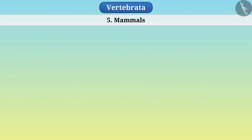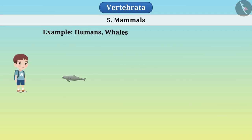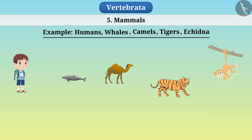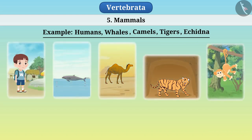Mammals include animals such as humans, whales, camels, tigers, echidna, etc. They are found in all types of environments such as land, water, desert, dark caves, forest, etc.